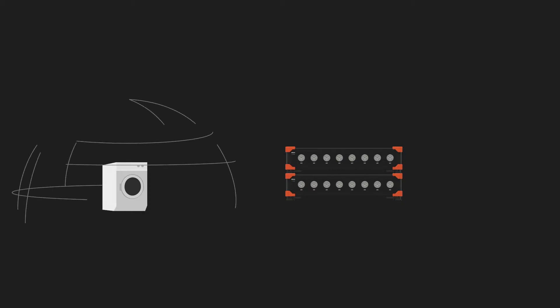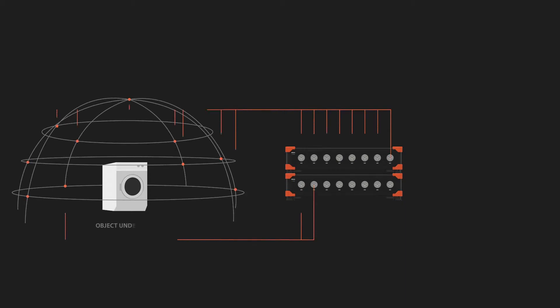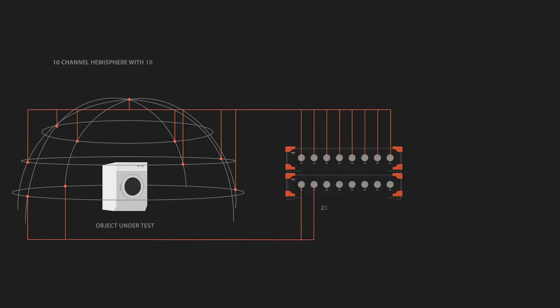But how is it measured? The most accurate method is to use an array of microphones and measure sound pressure on a number of microphone positions. Each position covers a corresponding partial area and by knowing the area, pressure and particle velocity, Sound Power can be calculated. So that is the science behind it.